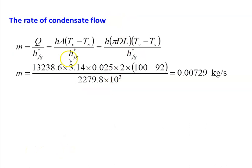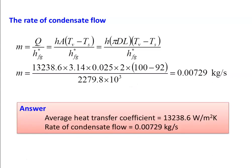The mass of condensate flow M = Q / HFG*, where Q = H × A × (Tv − Ts) and A = π × D × L. Substituting: 13238.6 × π × 0.025 × 2 × (100 − 92) / HFG* = 0.00729 kg/s. Answer to the problem: average heat transfer coefficient = 13238.6 W/m²·K and rate of condensate flow = 0.00729 kg/s.